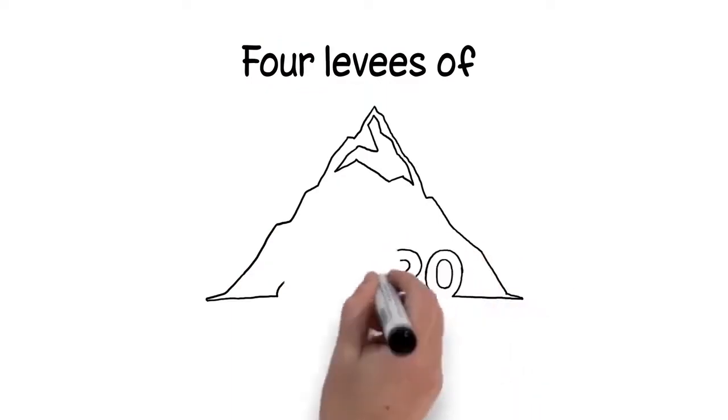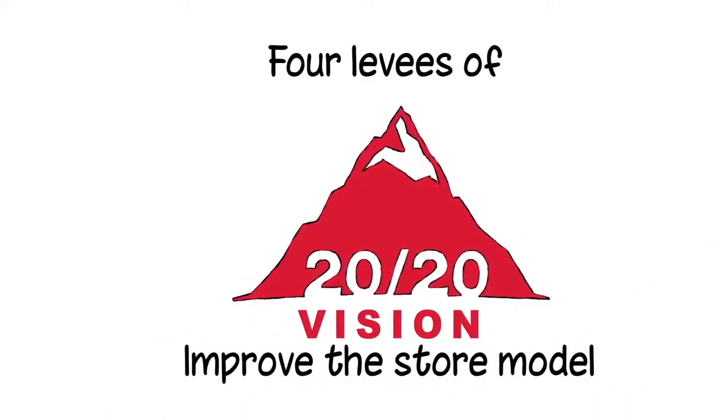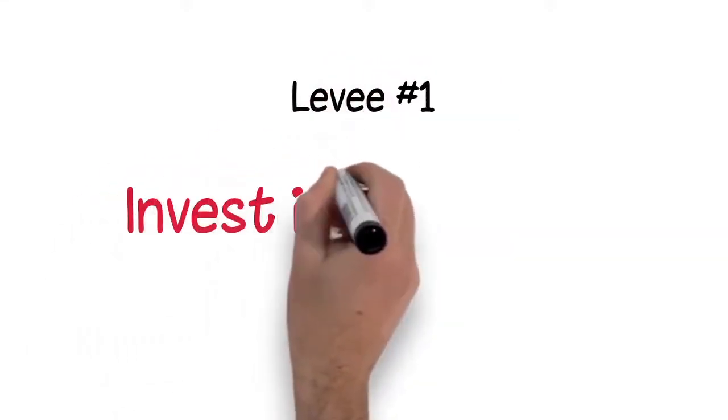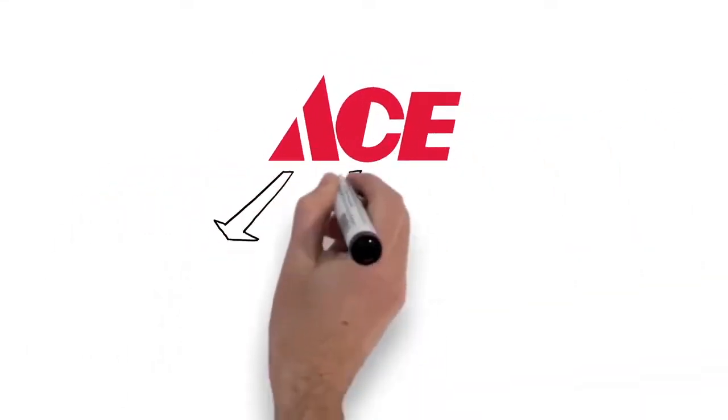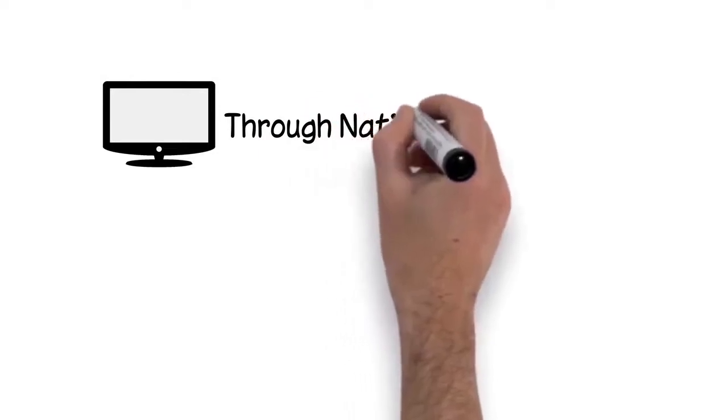We also have the four levies of 2020 Vision to improve the store model. The first levy is invest in the brand. We will continue to expand the moat between ACE and the competition by investing in the ACE brand. One way this will be done is through national advertising.